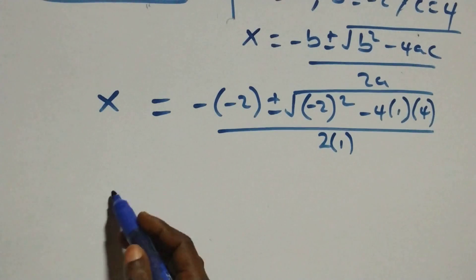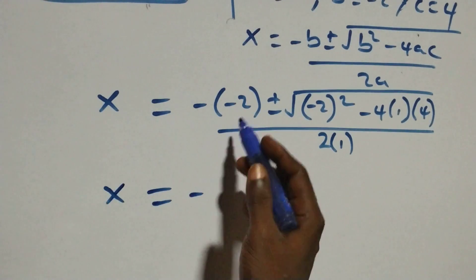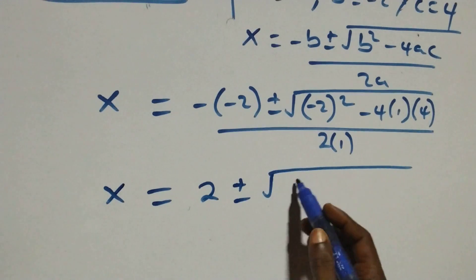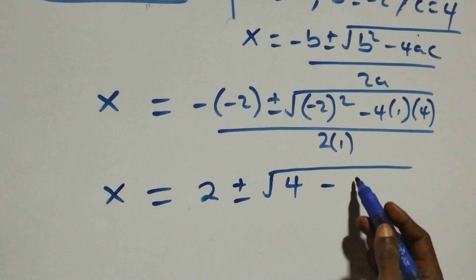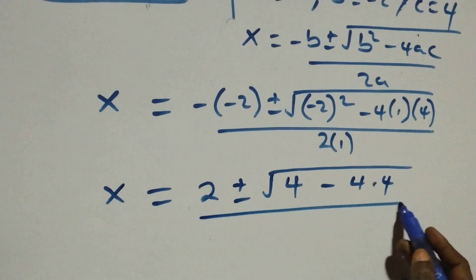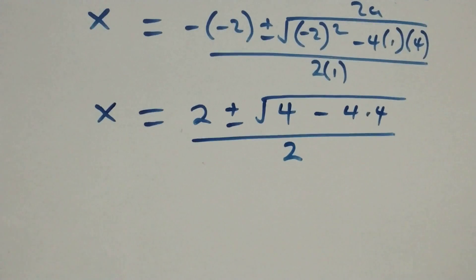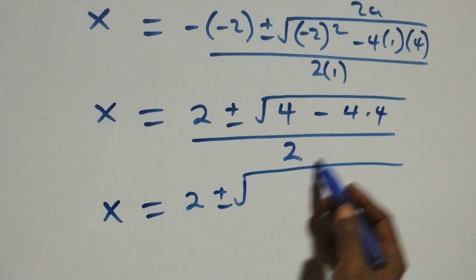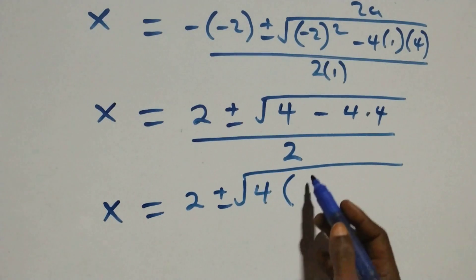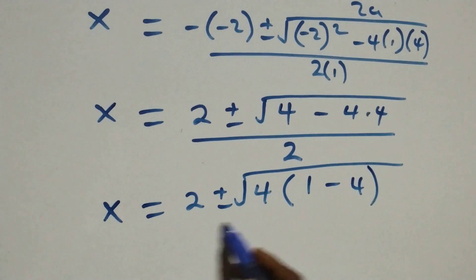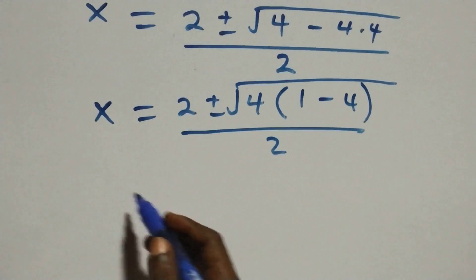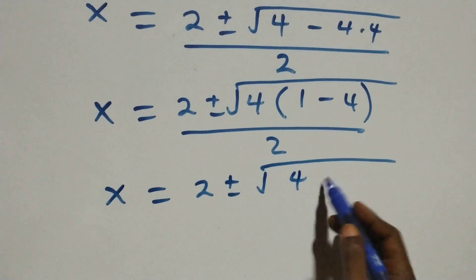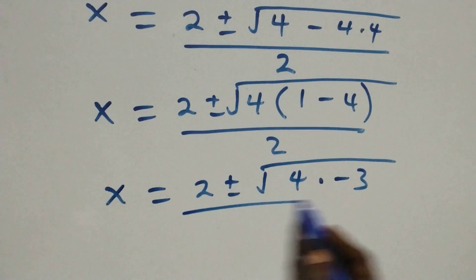This simplifies to x = 2 ± √(4 - 4·4) / 2, where the minus-minus becomes plus. Factoring out 4 inside the square root gives √(4·(1 - 4)) = √(4·(-3)), and 4 minus 16 leaves us with 4 times -3, all over 2.